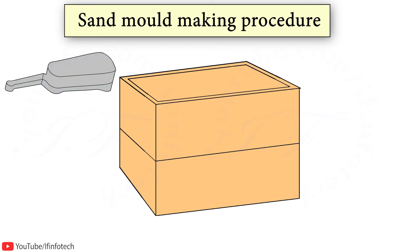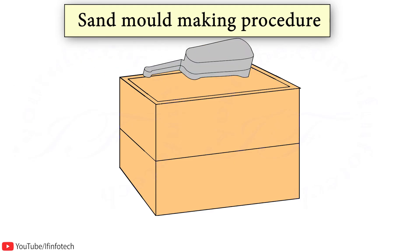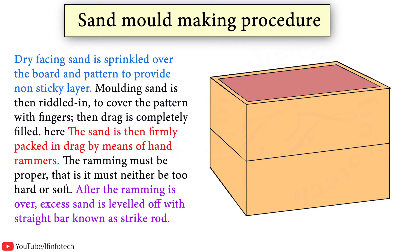the first step in making the mould is to place the pattern on the moulding board. The drag is placed on the board. Dry facing sand is sprinkled over the mould to provide a non-sticky layer. Moulding sand is then riddled in to cover the pattern with fingers. When the drag is completely filled, the sand is then firmly packed in the drag by means of a hand rammer.